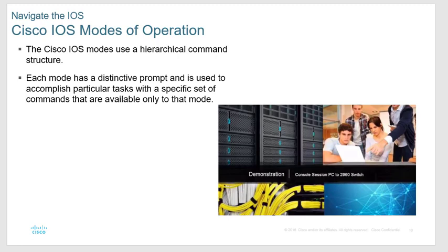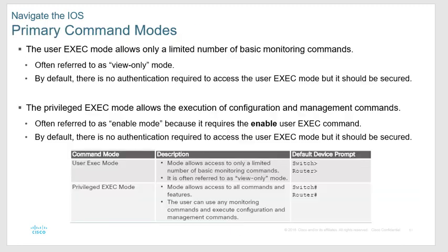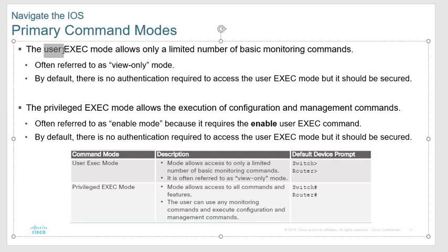Alright, IOS modes. The Cisco IOS uses a hierarchical command structure, meaning there are different modes, and in a different mode you can do different things. The farther in you go, typically the more control you have on the router. When you first start out, it starts in user mode — also called user exec mode. In user mode, the prompt looks like just 'router' and then a greater-than sign. You will see that on the CCNA — they'll show you a prompt and ask what mode the router is in.